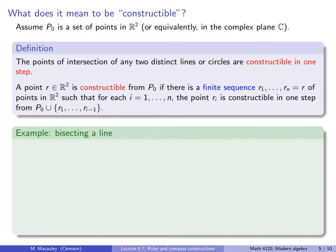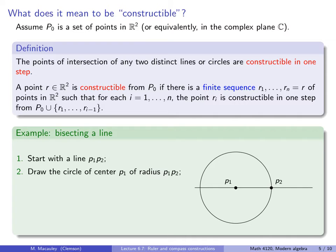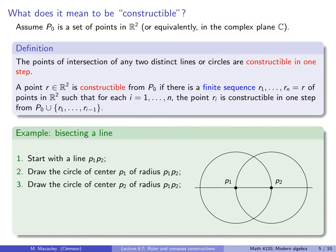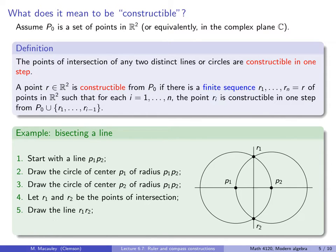Let's do some basic examples of constructions. First, bisecting a line. We start with a line segment P₁P₂ which we wish to bisect. Draw the circle of center P₁ and radius P₁P₂. Next, draw the circle of center P₂ and radius P₁P₂. Let R₁ and R₂ be the points of intersection of these two circles, and draw the line between R₁ and R₂ — that bisects the original segment. Let R₃ be the intersection of segments P₁P₂ and R₁R₂.